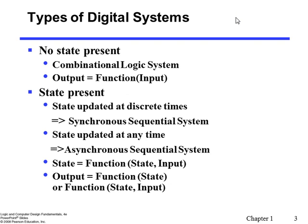We have two types of digital systems. The first has no state, and the second category has states. The first category is called the combinational logic system, where the output is directly dependent upon the current input. Something that happened in the past is not a determining factor for the current output. State means something happened in the past — it's something like a history — so a combinational logic system does not have any history.